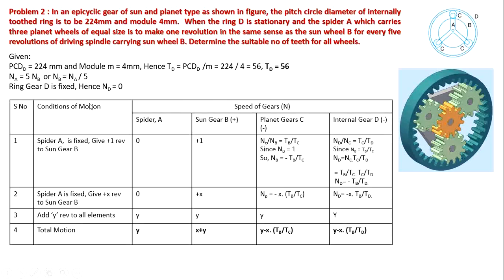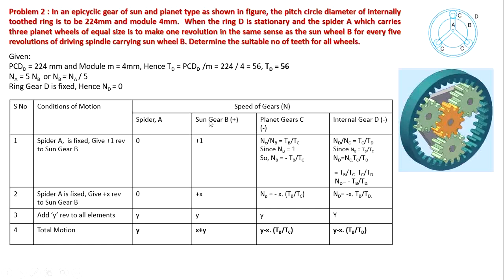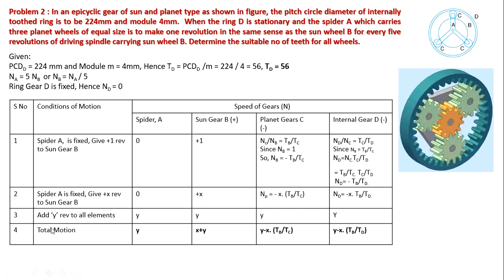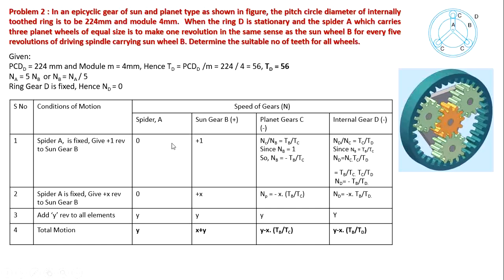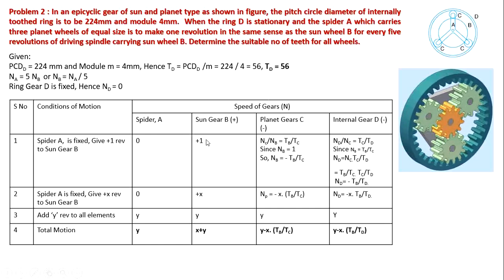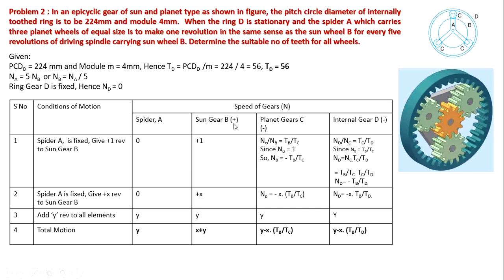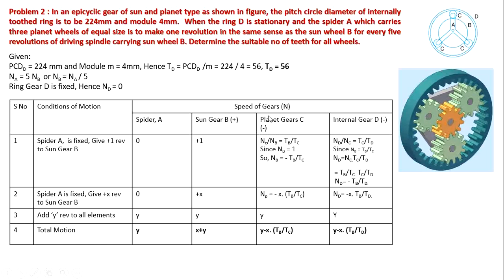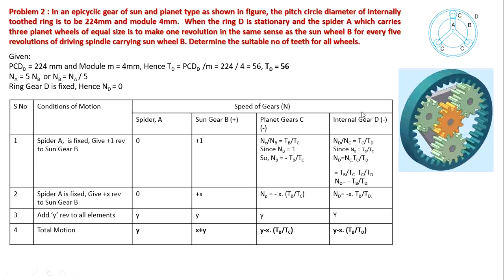Setting up the tabulation with columns: spider/arm A, sun gear B, planet gear C, and internal gear D. Arm is fixed and 1 revolution given to sun gear B (plus 1 anticlockwise). For planet gear C, since it externally meshes with B: NC/NB equals TB/TC, so NC equals minus TB/TC. Since C and internal gear D are internally meshing, if C is clockwise then D rotates in the same direction, so ND equals minus TB/TD.